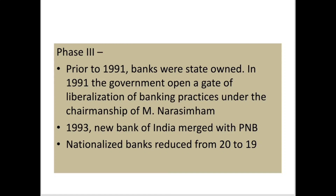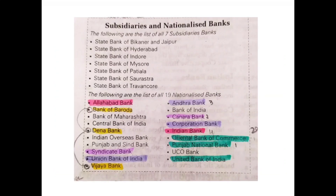In 1993, the New Bank of India merged with PNB. So the total nationalized banks became 19 — that is, 14 from 1969 and 6 from 1980, minus one merger. In Phase 3, there were 7 subsidiary banks and 19 nationalized banks, which further merged with many banks.